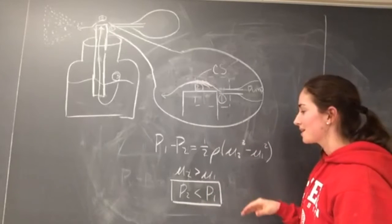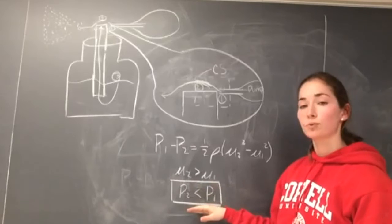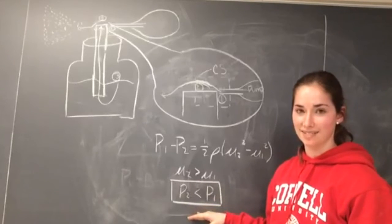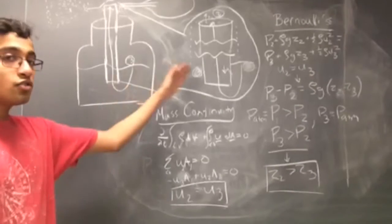Applying Bernoulli's, then, since U2 is greater than U1, then pressure two must be less than pressure one at the top of the tube.